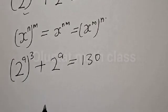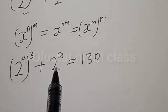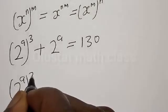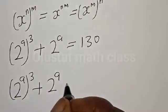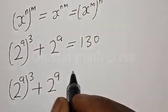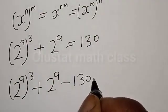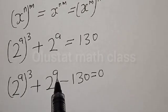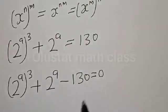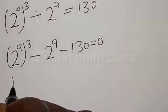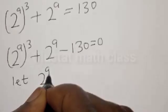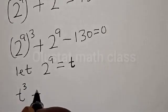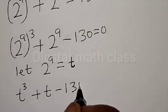We have 2 raised to power a, cubed, plus 2 raised to power a is equal to 130. So 2 raised to power a cubed plus 2 raised to power a minus 130 is equal to zero — we've equated to zero. Let t equal 2 raised to power a. Then we have t cubed plus t minus 130 equal to zero.